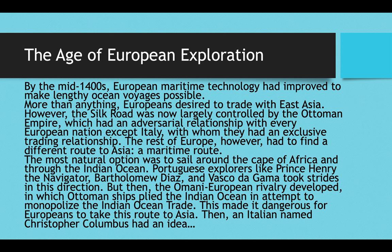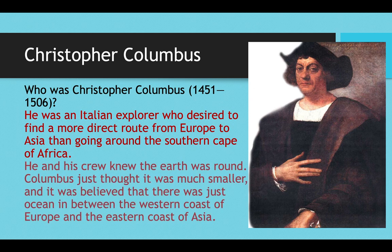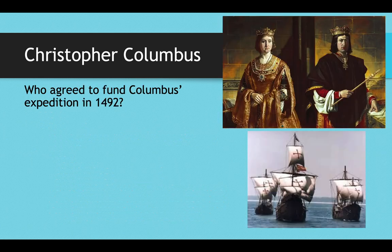An Italian man named Christopher Columbus had the idea to go west. He was an Italian explorer who wanted to find a more direct and safer route from Europe to Asia than going around the southern Cape of Africa through the Indian Ocean and the Straits of Malacca. Columbus and his crew did know the earth was round — Columbus just thought it was much smaller and believed there was only ocean between the western coast of Europe and the eastern coast of Asia. Of course, he was mistaken. Even though Columbus was Italian, the Italian leaders would not fund his expedition — they saw it as completely unnecessary, since they already had a great trading relationship with the Ottomans along the Silk Road.